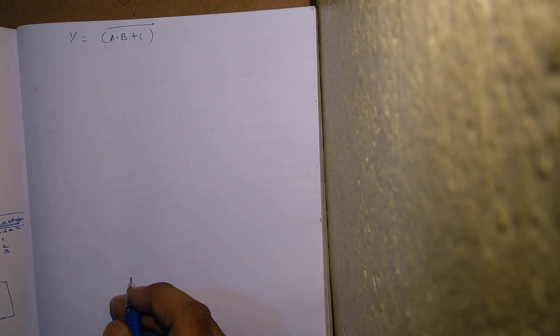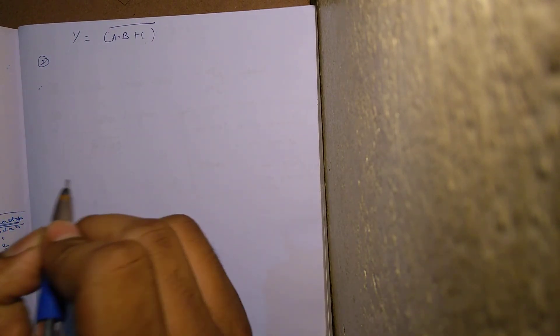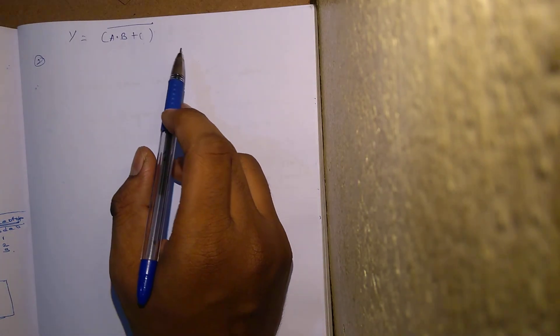So the first condition is satisfied. Let us move to the second step. We need to draw a static CMOS circuit diagram for this expression. As you remember, for NMOS: plus indicates parallel and dot indicates series. For PMOS transistors: plus indicates series and dot indicates parallel.